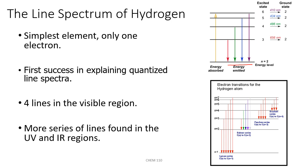All of the transitions in the visible region correspond to the electron falling to the second main energy level. So one is starting at six and falling to two, one is starting at the fifth energy level and falling to the second, one at the fourth to the second, and one at the third to the second main energy level.